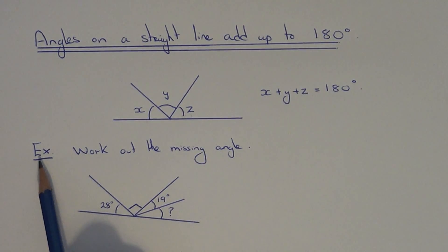Let's have a look at an example. We've got to work out the missing angle. As you can see, we've got a straight line with four angles on it. We know that these four angles add up to 180 degrees.